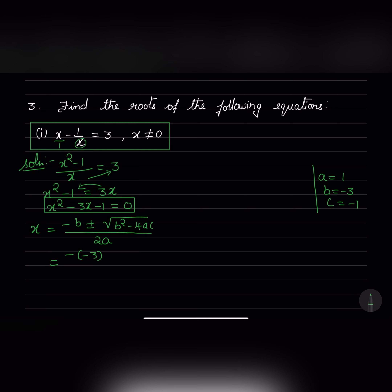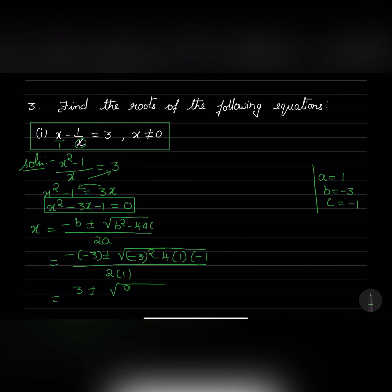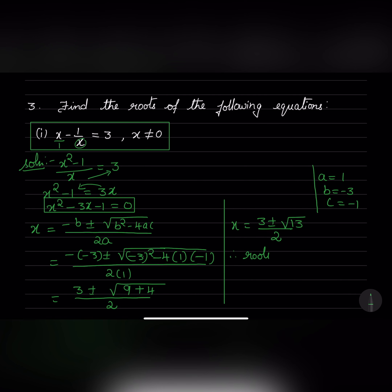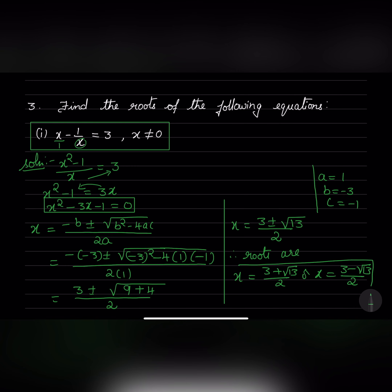After simplifying: minus into minus gives plus 3, plus or minus square root of 9 — minus into minus gives plus 4, divided by 2. After simplifying, x equals 3 plus or minus square root of 13, divided by 2. Therefore the roots are x equals 3 plus root 13 over 2, or x equals 3 minus root 13 over 2. These are the two roots of the given equation.